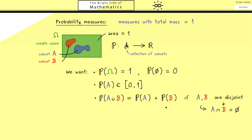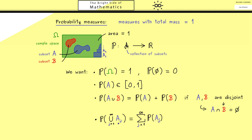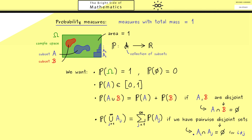There is one thing missing: this formula should also hold in a limit process. We look at a countable union of subsets — in our picture this means we approximate an area by adding up countably many areas. In our formula we have a series from 1 to infinity, so the union goes to a sum. For this formula we also need the assumption of a disjoint union, meaning the family A_j is pairwise disjoint — no matter which two different sets A_i and A_j you choose, you always have an empty intersection.